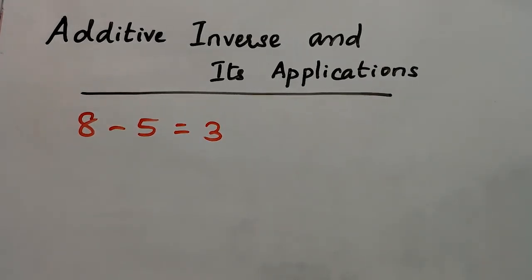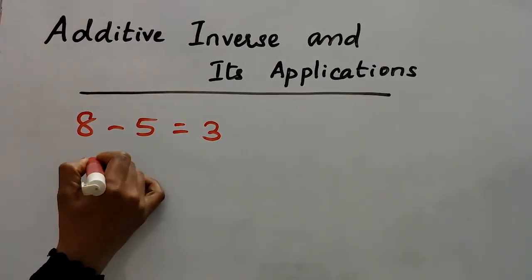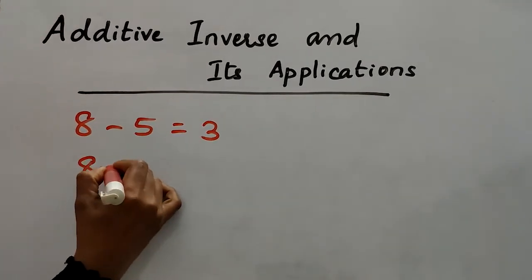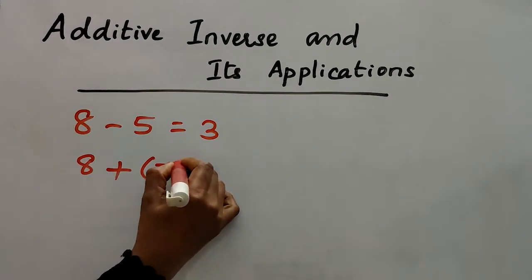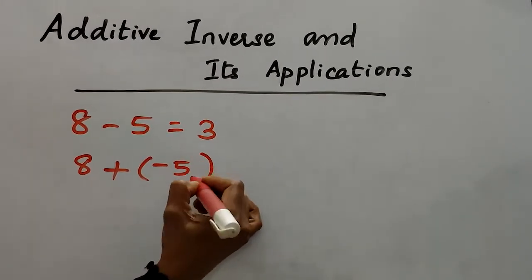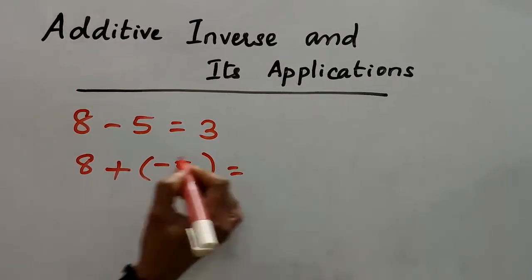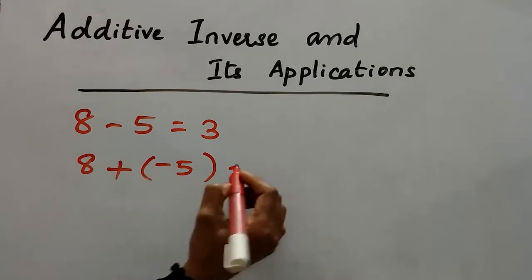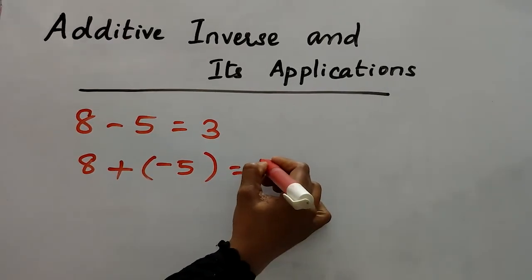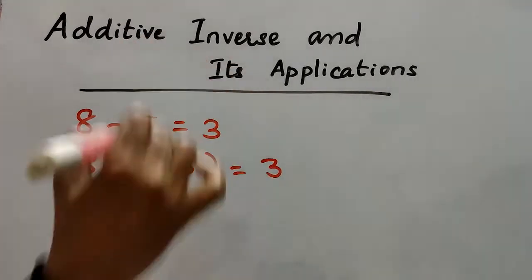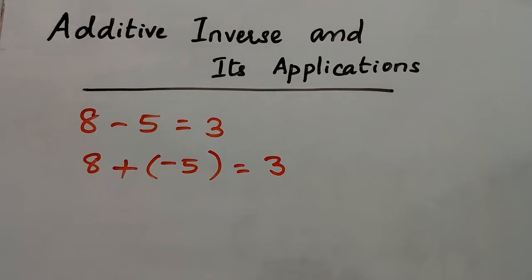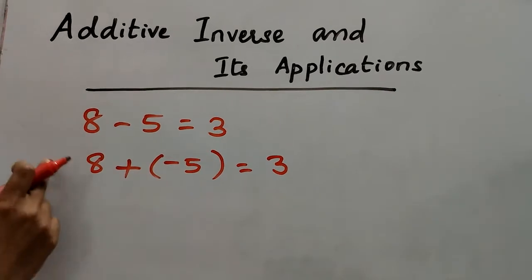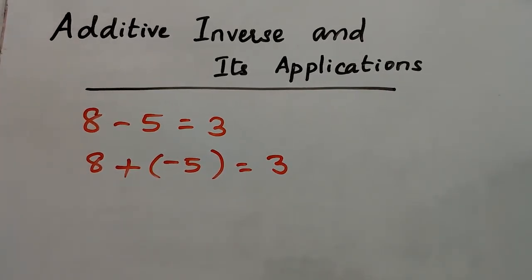I'm going to rewrite this equation as 8 plus negative 5 equals. Here one number is positive and the other is negative, so we subtract and put the sign of the bigger number. We get the answer as 3.